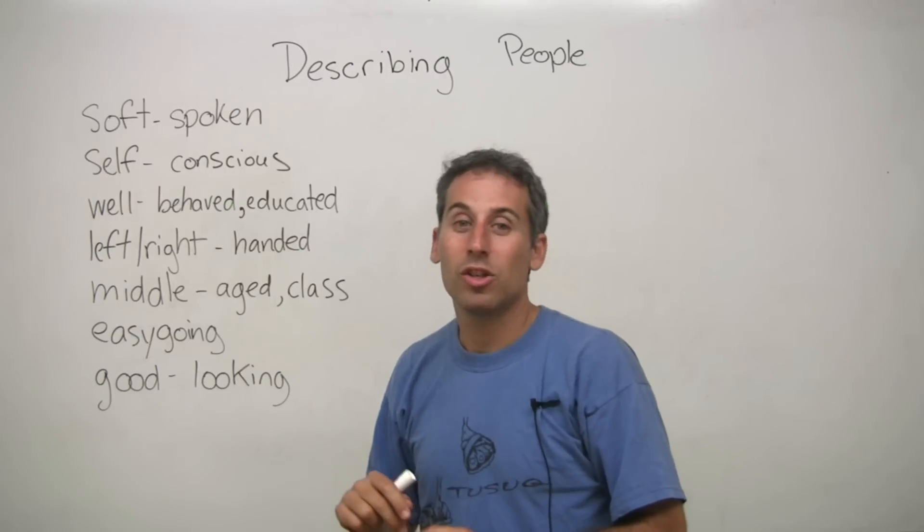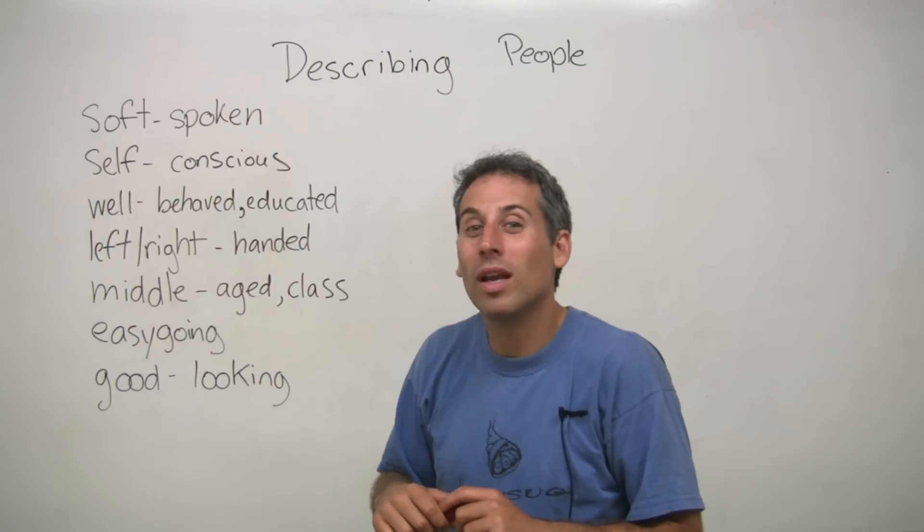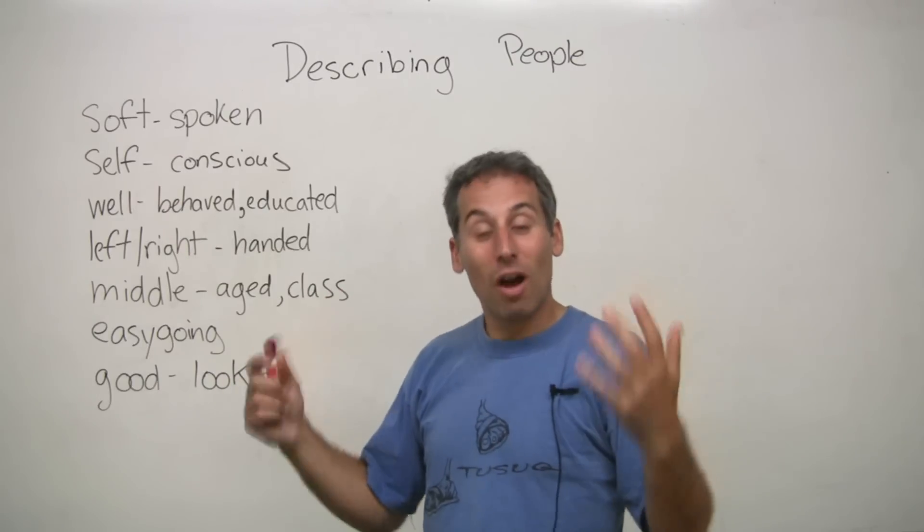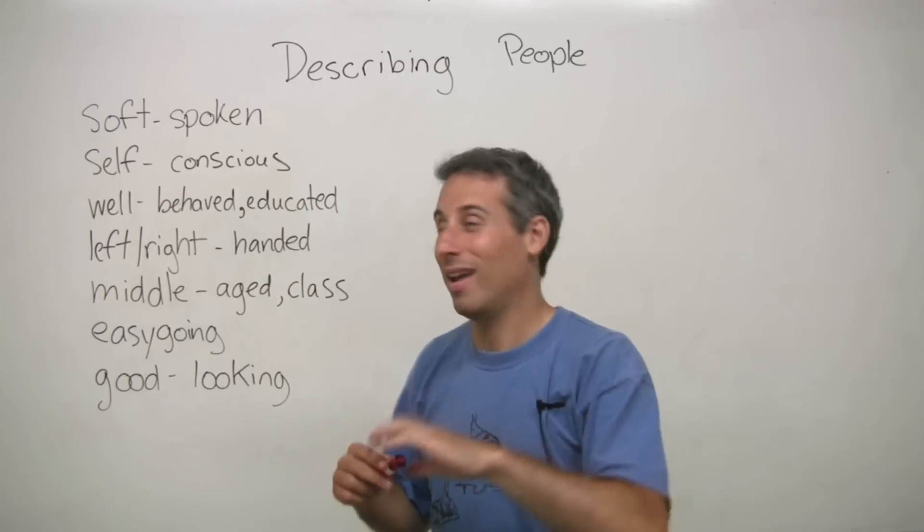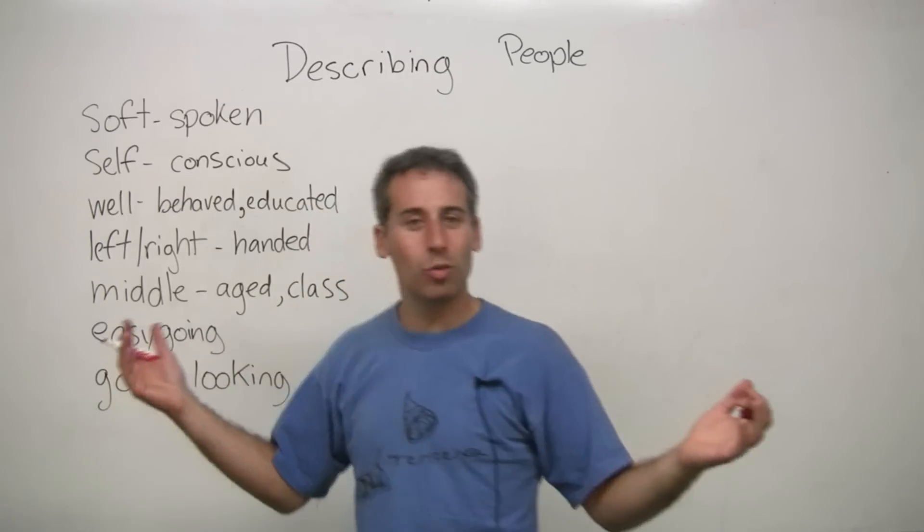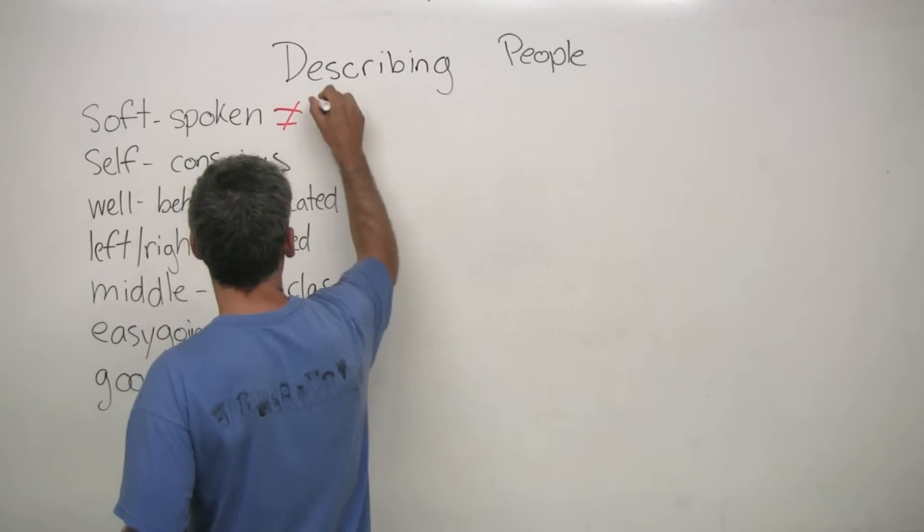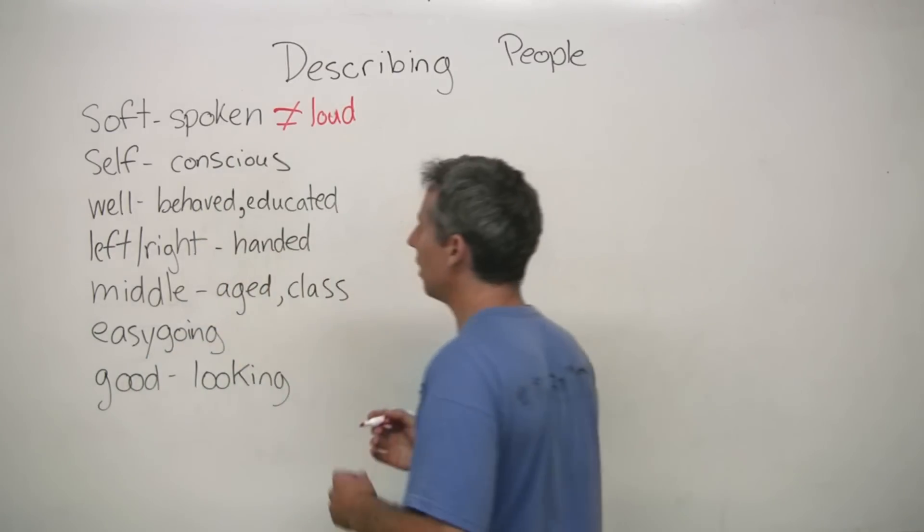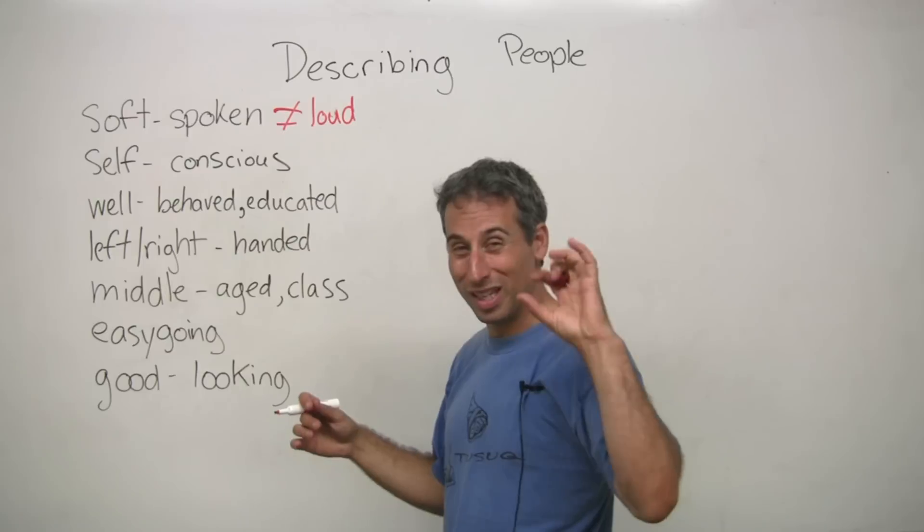Soft-spoken. A person that speaks quite low, like quietly. So a soft-spoken person is someone who speaks softly, very quiet. The opposite would be, of course, loud. So that's the opposite, soft-spoken is someone who speaks quietly.